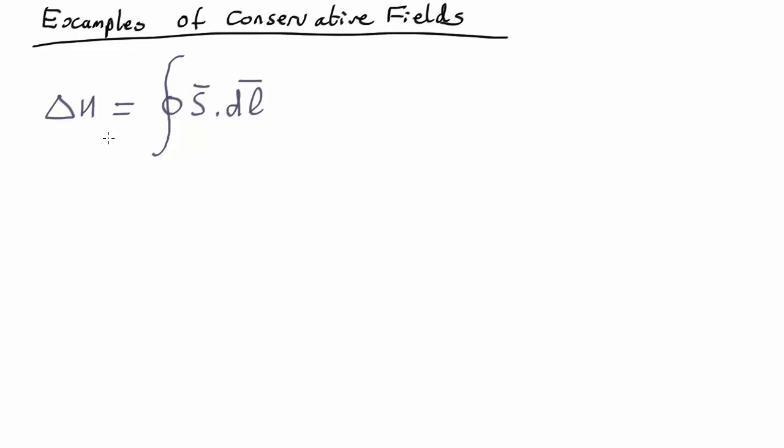For gravity, we can define the integral along a line of the gravitational force, which is a vector, dot dl, and minus that, as it happens, is the change in gravitational potential energy.